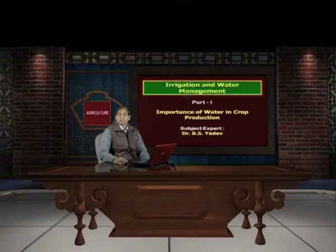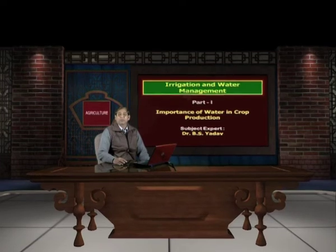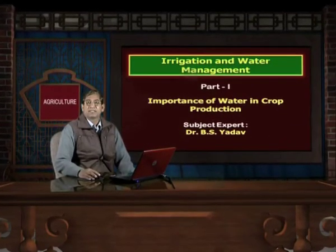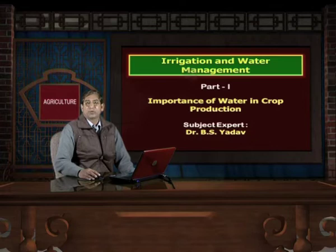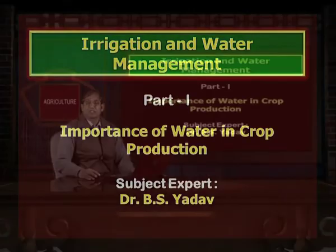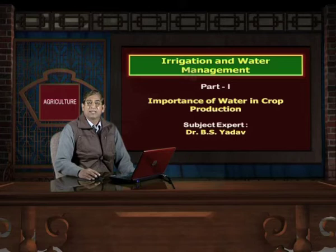Hello viewers. Today in this part I am going to discuss the importance of water in crop production. As you know, water is essential for the existence of life; without water one cannot think about life on the earth. Optimum quantity of water is required for higher crop productivity. If water is deficient, crop production is adversely affected. On the other hand, if water is in excess, again crop production is adversely affected. So, optimum quantity of water is required for higher crop production.